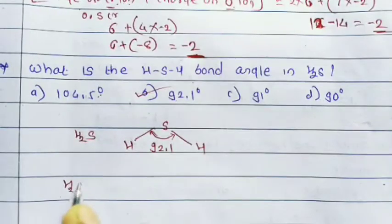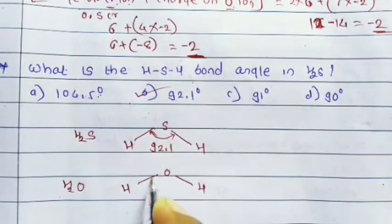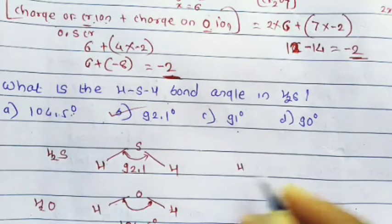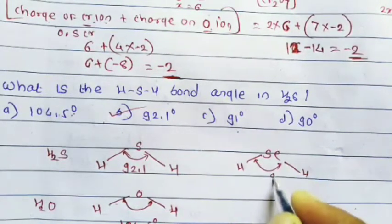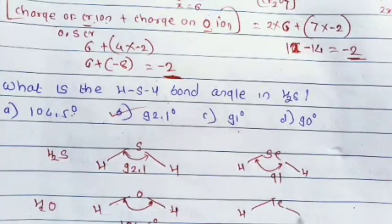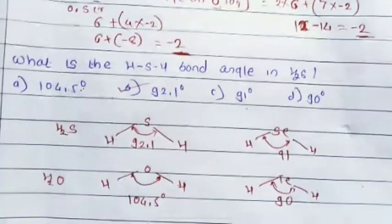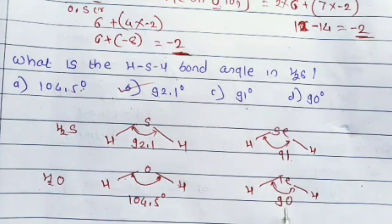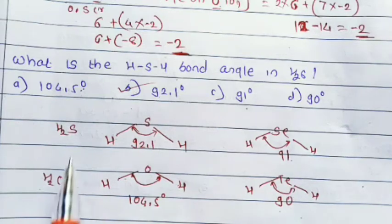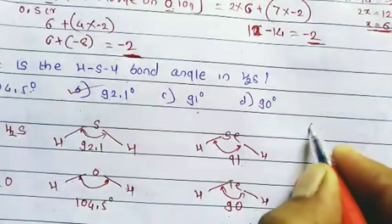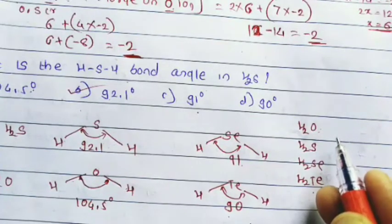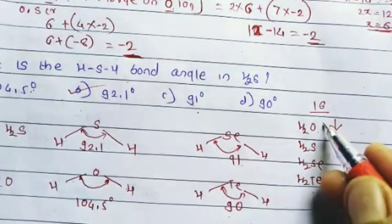For comparison: the H-O-H bond angle in water is 104.5°, H-Se-H in H₂Se is 91°, and H-Te-H in H₂Te is 90°. The bond angle of group 16 elements decreases from oxygen to tellurium: H₂O (104.5°) > H₂S (92.1°) > H₂Se (91°) > H₂Te (90°).